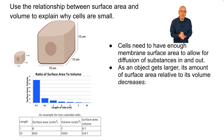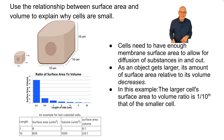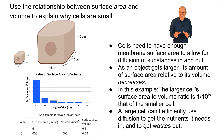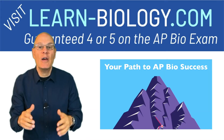So that's the math, and here's the fact: as an object gets larger, its amount of surface area relative to its volume decreases. In this example, the larger cell's surface area to volume ratio is one-tenth that of the smaller cell. A large cell can't efficiently use diffusion to get the nutrients it needs in — oxygen, food — into the cell, and to get waste — carbon dioxide and metabolic waste — out.